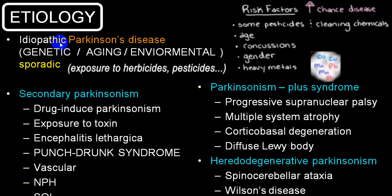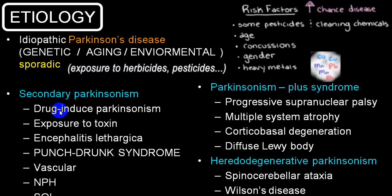Etiology is divided into three big groups: idiopathic, secondary, and Parkinsonism plus. Among idiopathic, the most common is Parkinson's disease, which has genetic etiology — maybe familial or sporadic — partly due to environmental factors like herbicides or pesticides, and aging. Secondary Parkinsonism causes include drug-induced, toxins, encephalitis, repeated trauma like punch-drunk syndrome, vascular, normal pressure hydrocephalus. Parkinsonism plus includes progressive supranuclear palsy, multiple system atrophy, diffuse Lewy body, corticobasal degeneration, and among hereditodegenerative, spinocerebellar ataxia and Wilson's disease.